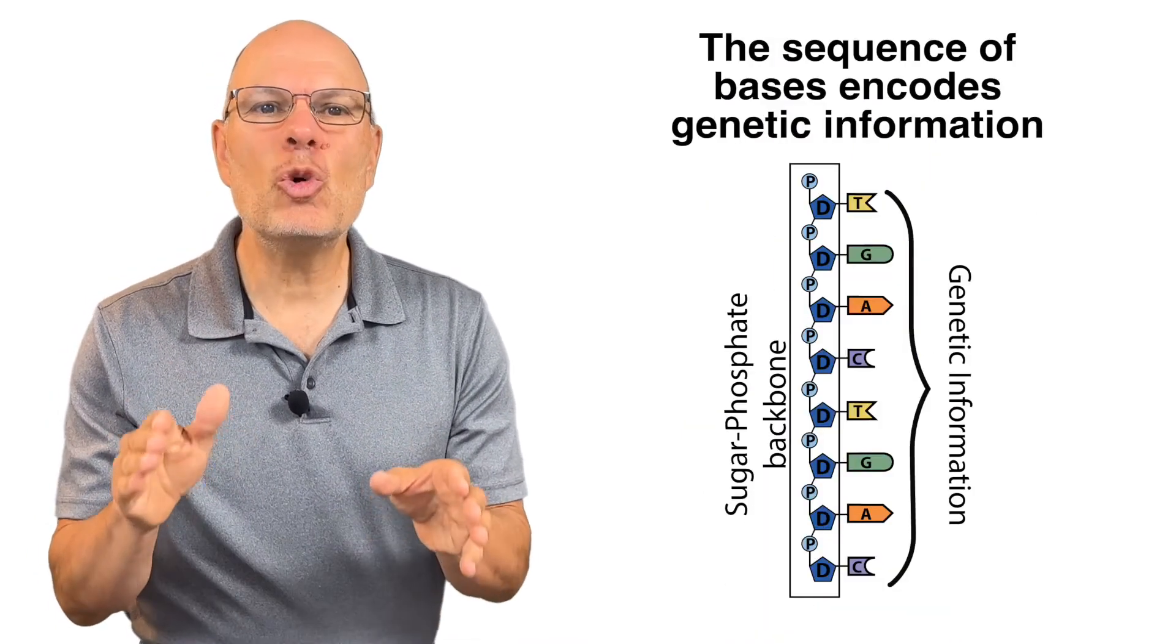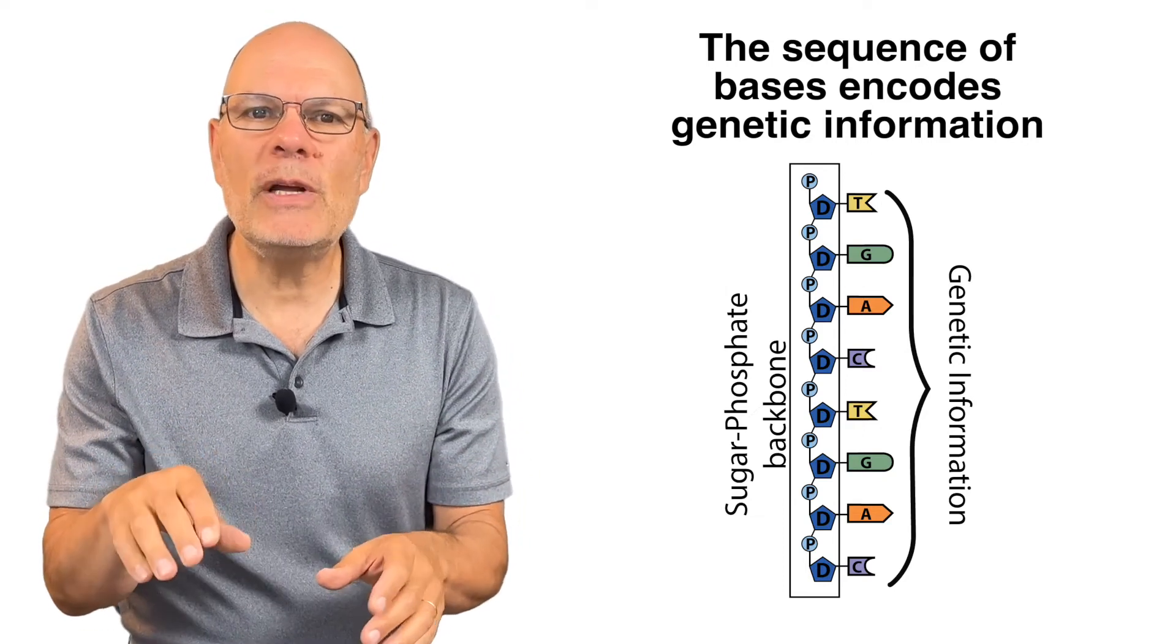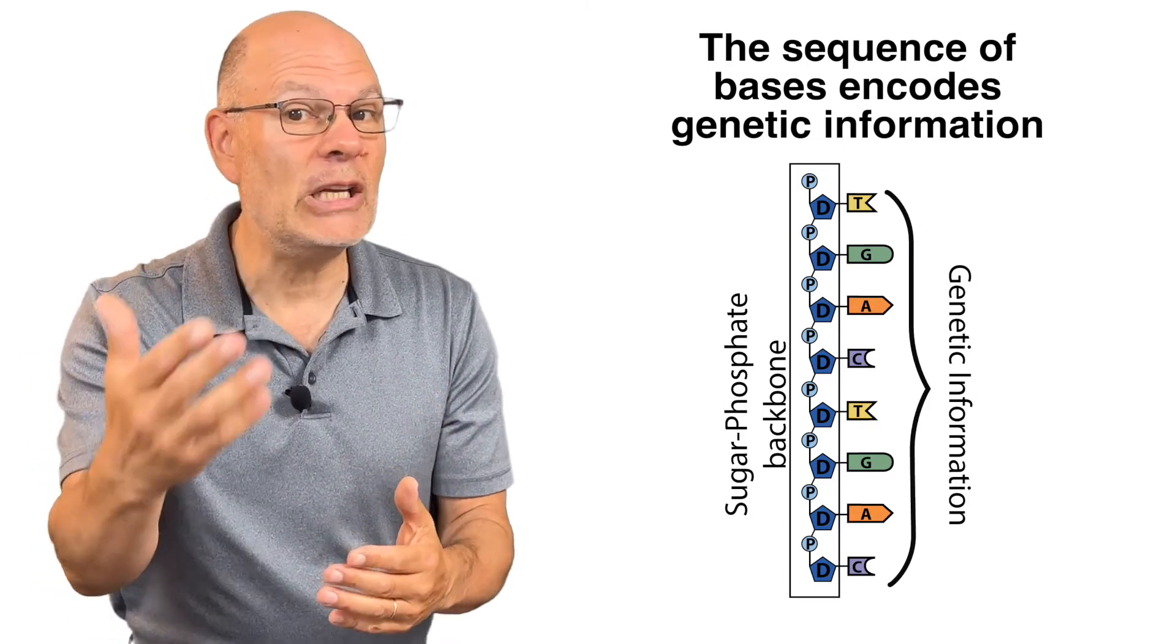Seven, DNA stores genetic information in the sequence of nitrogenous bases. That sequence codes for the proteins that determine the traits of organisms like you and me.